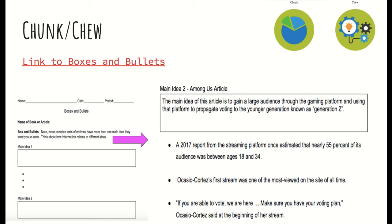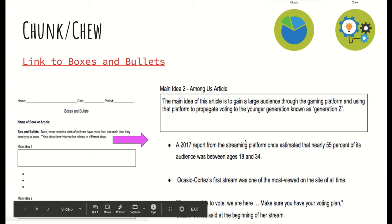So let's take a look at my first bullet: a 2017 report from the streaming platform once estimated that nearly 55% of its audience was between ages 18 and 34. Let's take a look back at the article. Twitch is geared towards gamers and live streaming — a 2017 report from the streaming platform was once estimated at 55%. I use that because that is part of the younger generation, Generation Z.